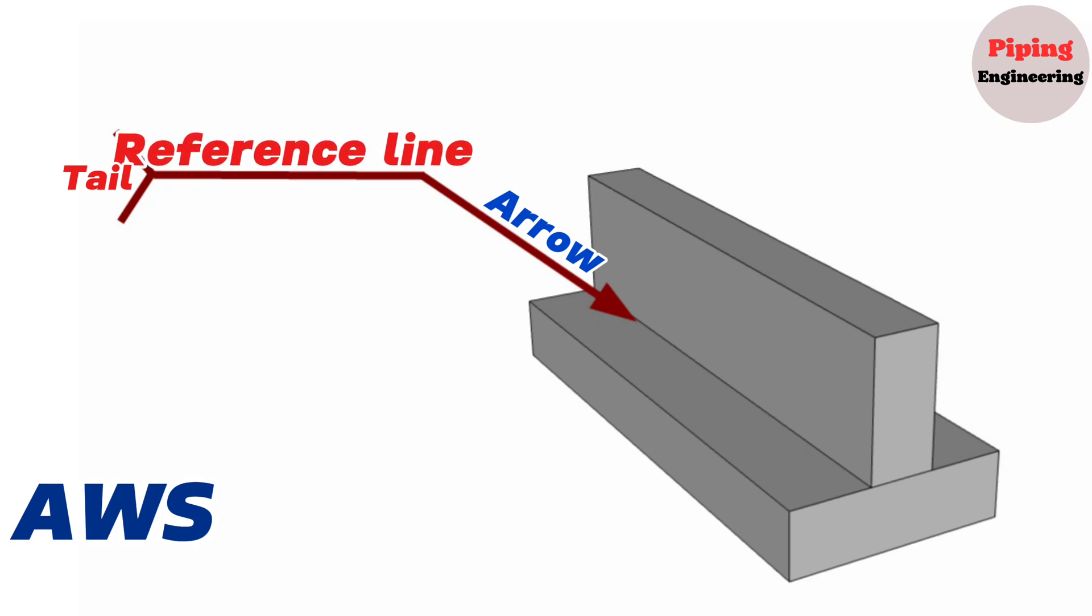Reference line. The reference line is the horizontal line that serves as the anchor for all welding symbols and elements. Designers use the reference line to show the size of the weld and depth of penetration.